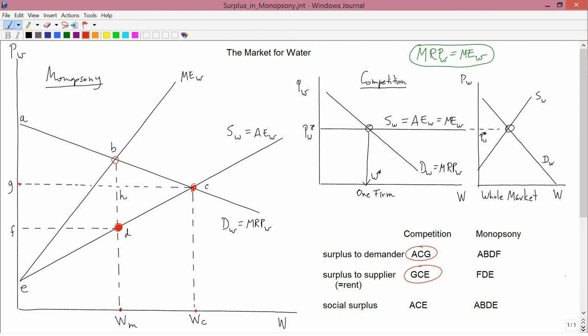So that verifies that point. And finally, the social surplus, which is the sum of that. So the sum of ACG and GCE is ACE. So all that area is the area of social surplus that you get under competition.